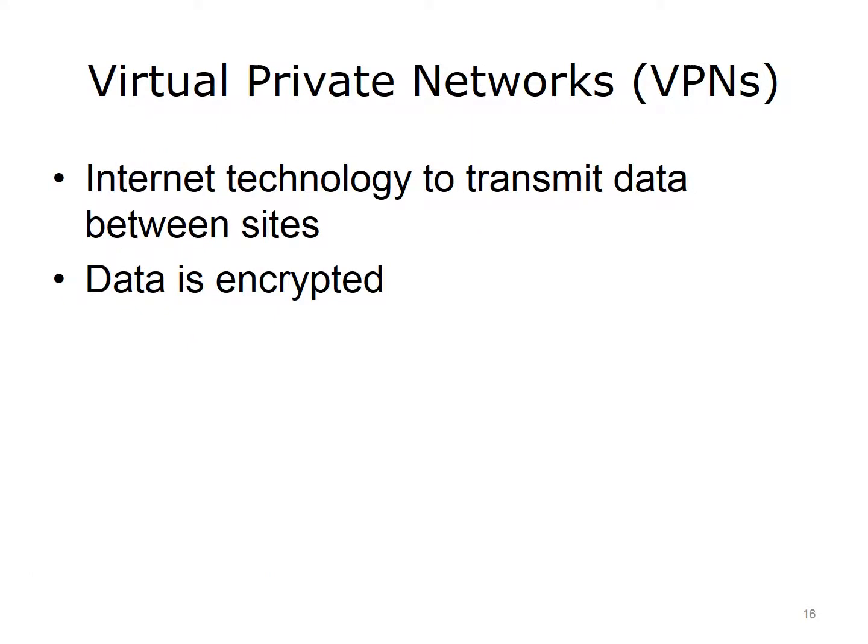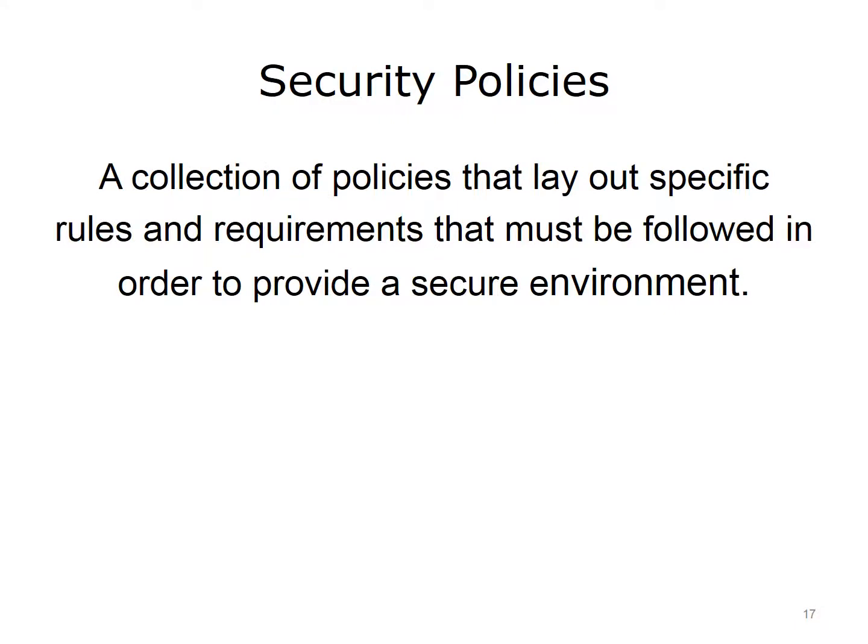Virtual Private Networks, VPNs, use Internet technology to transmit data between sites. The data is encrypted as it travels from site to site and is kept separate from the other data traveling on the Internet — think of it as an HOV or high-occupancy vehicle lane on a four-lane highway. Security policies are a collection of policies that lay out specific rules and requirements that must be followed in order to provide a secure environment. Some common security policies are the Acceptable Use Policy, AUP, Password Policy, and Ethics Policy. An AUP would lay out what a user can and cannot do on a computer system.